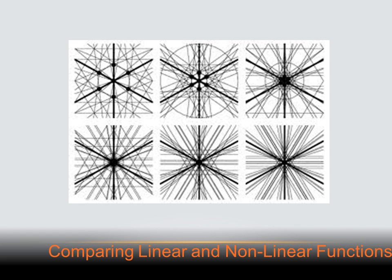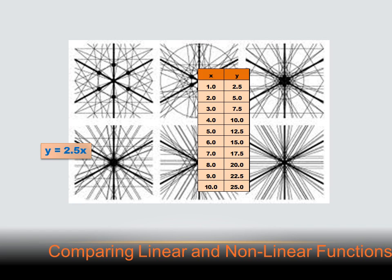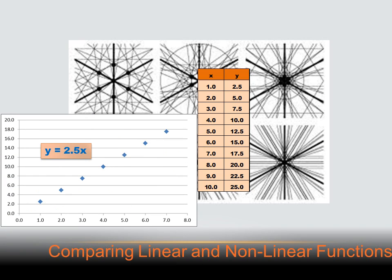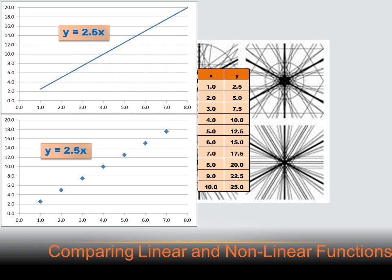I want to remind you of a distinction between two kinds of domains. If we had an equation y equals 2.5x, we could graph it or create a chart. It would be represented as a straight line or a series of points, depending on whether the domain was continuous or discrete. If we could only get whole number x values, the domain would be discrete. If we could get values like 1.5 or 2.67, it would be a continuous domain, graphing as a line — that's a linear function.